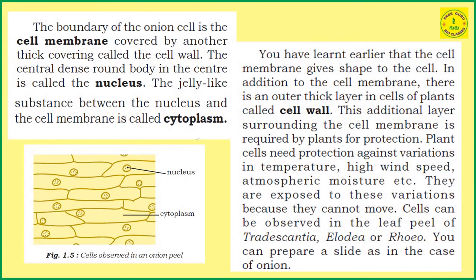When we observe under the microscope, we can find this type of picture. The boundary of the onion cell is the cell membrane, covered by another thick covering called cell wall. The central, dense, round body in the center is called nucleus.